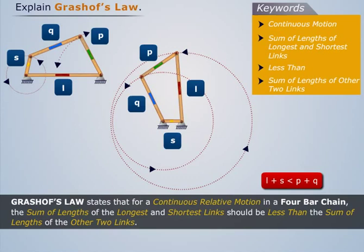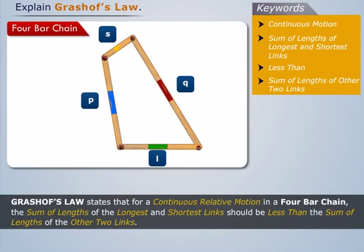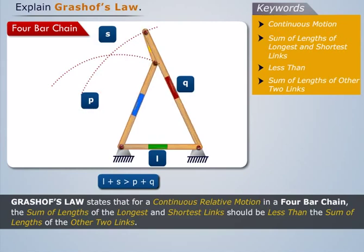Now let us discuss what happens if the chain does not follow Grashoff's Law. Consider a four-bar chain which does not follow Grashoff's Law. If we fix link L and impart motion to the mechanism, then the links P and Q oscillate.